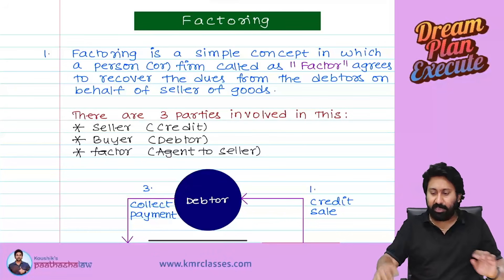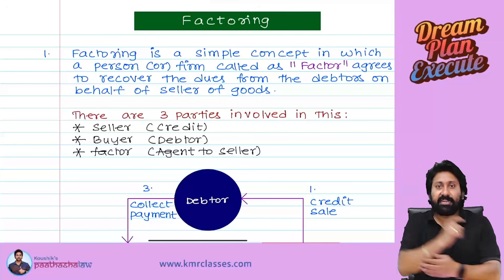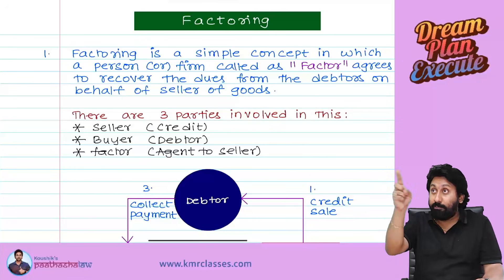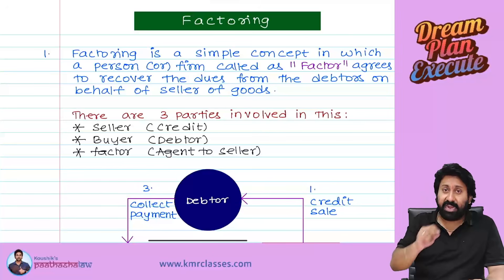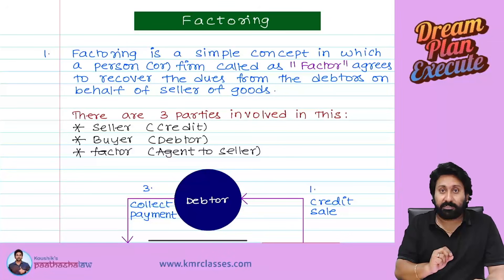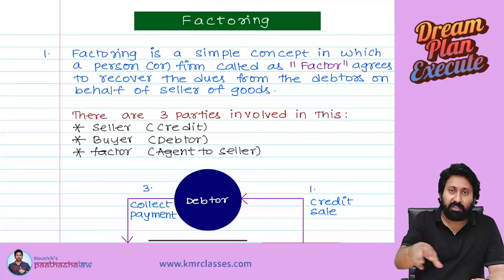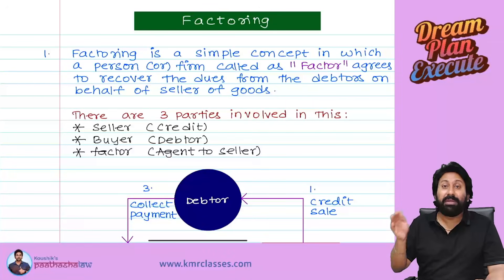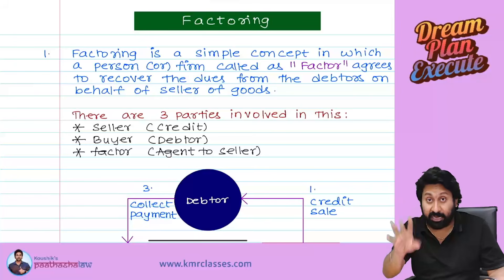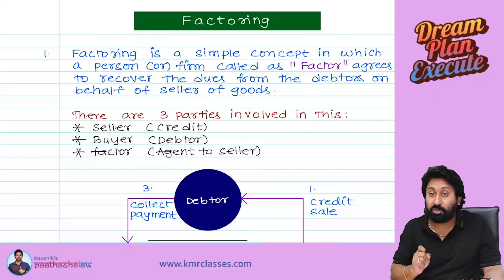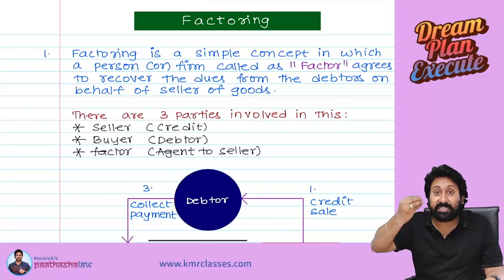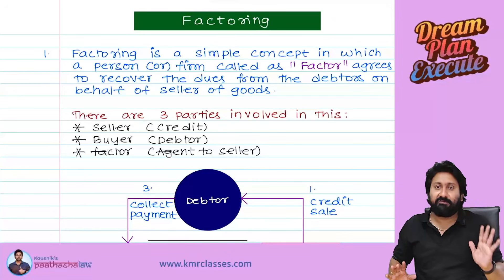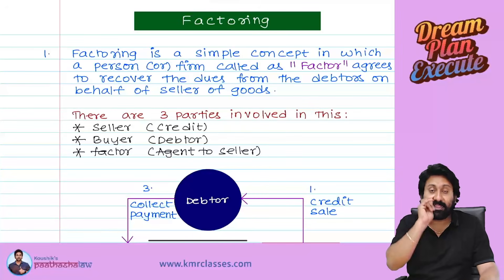On the balance sheet, receivables represent cash that is blocked — say, for three months. There is also a bad debt problem. To summarize, there are two problems with debtors: blockage of amount in the form of credit sales/debtors, and bad debts. Factoring came into existence to overcome these two problems. Understanding the logic means that in the exam, whatever question comes, you will be confident and clear.